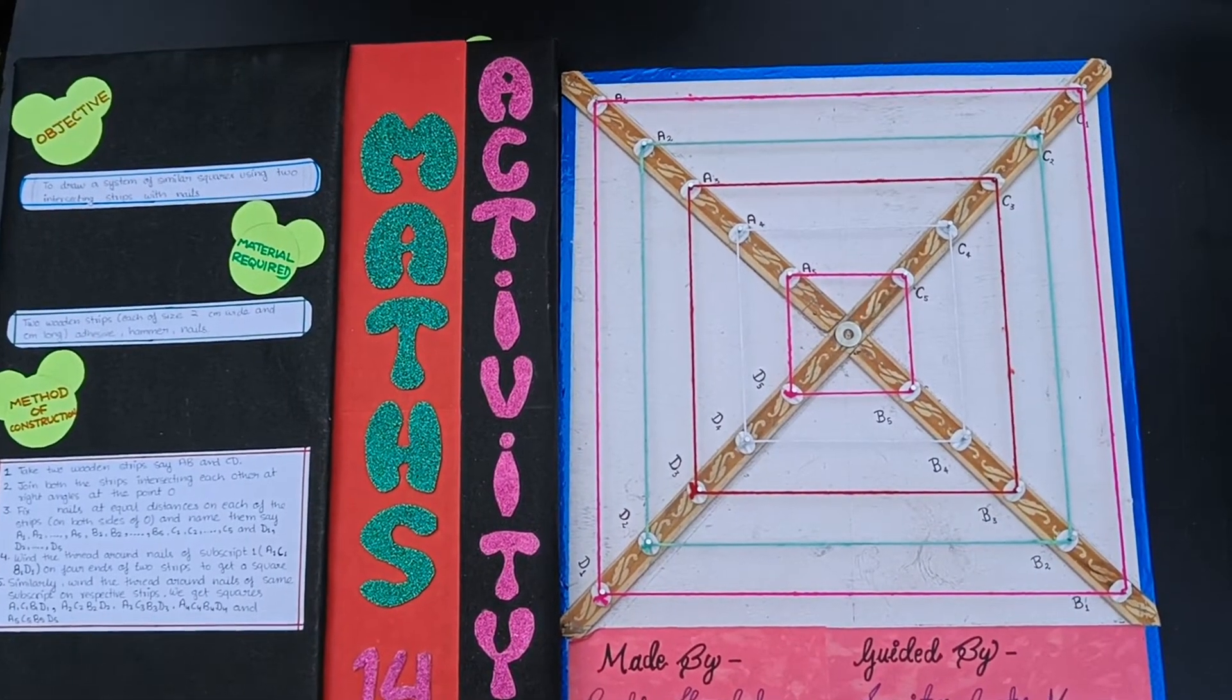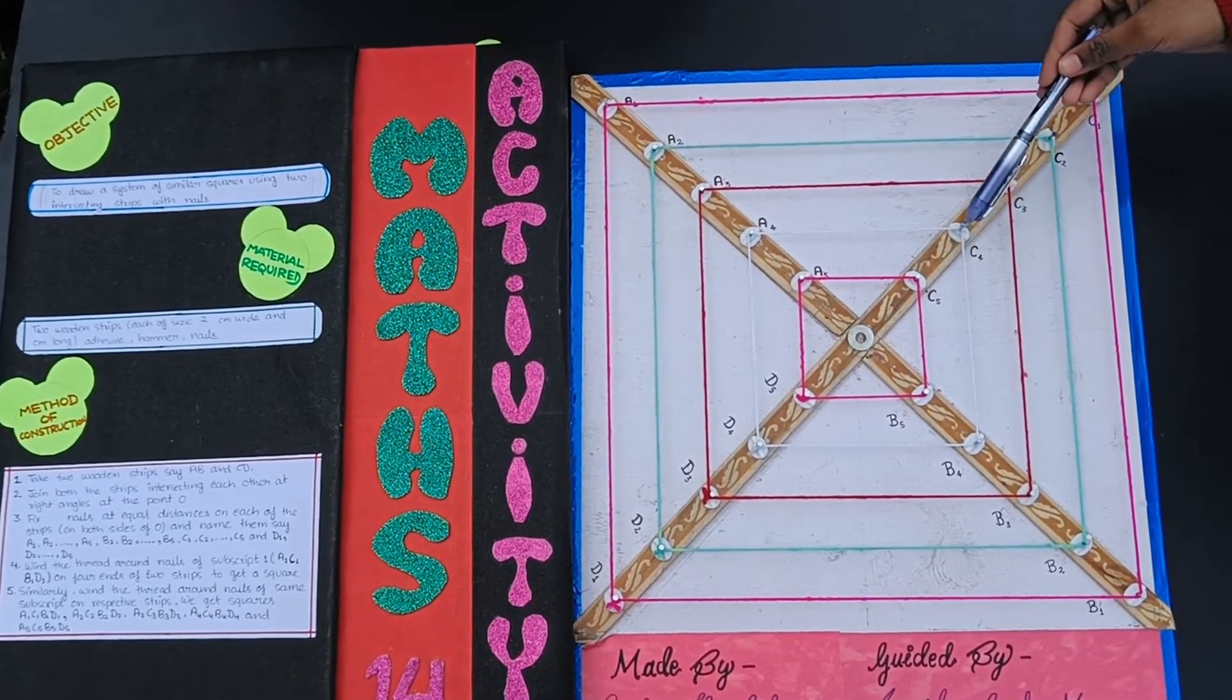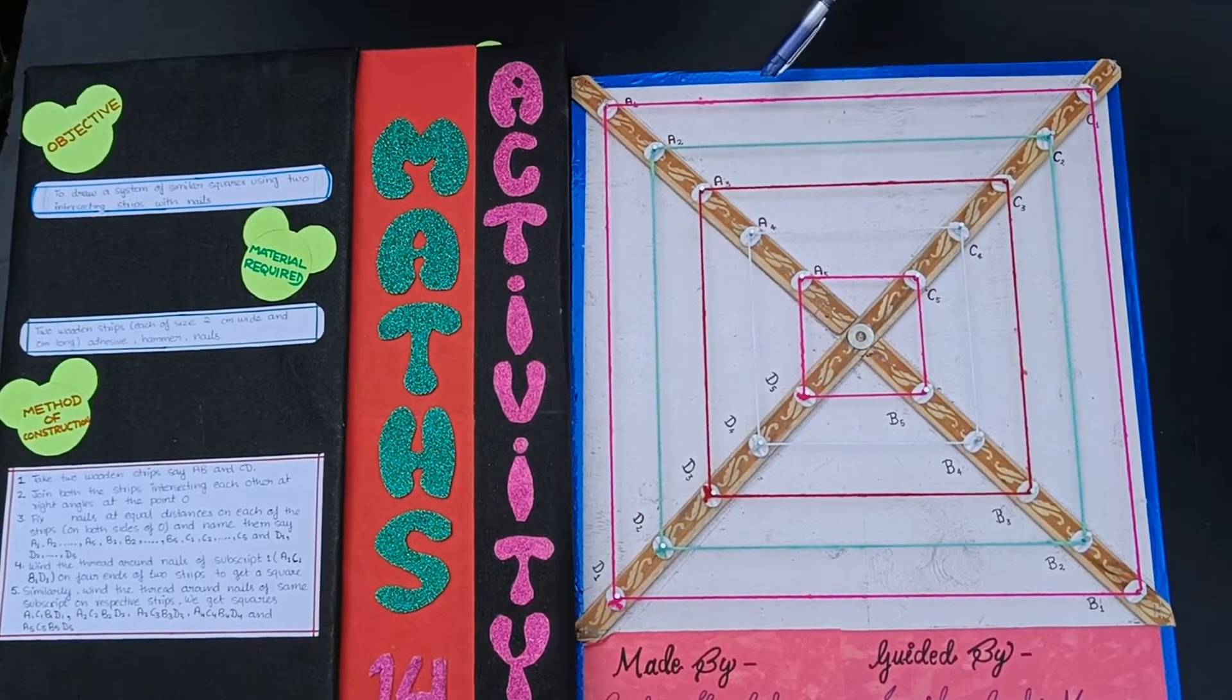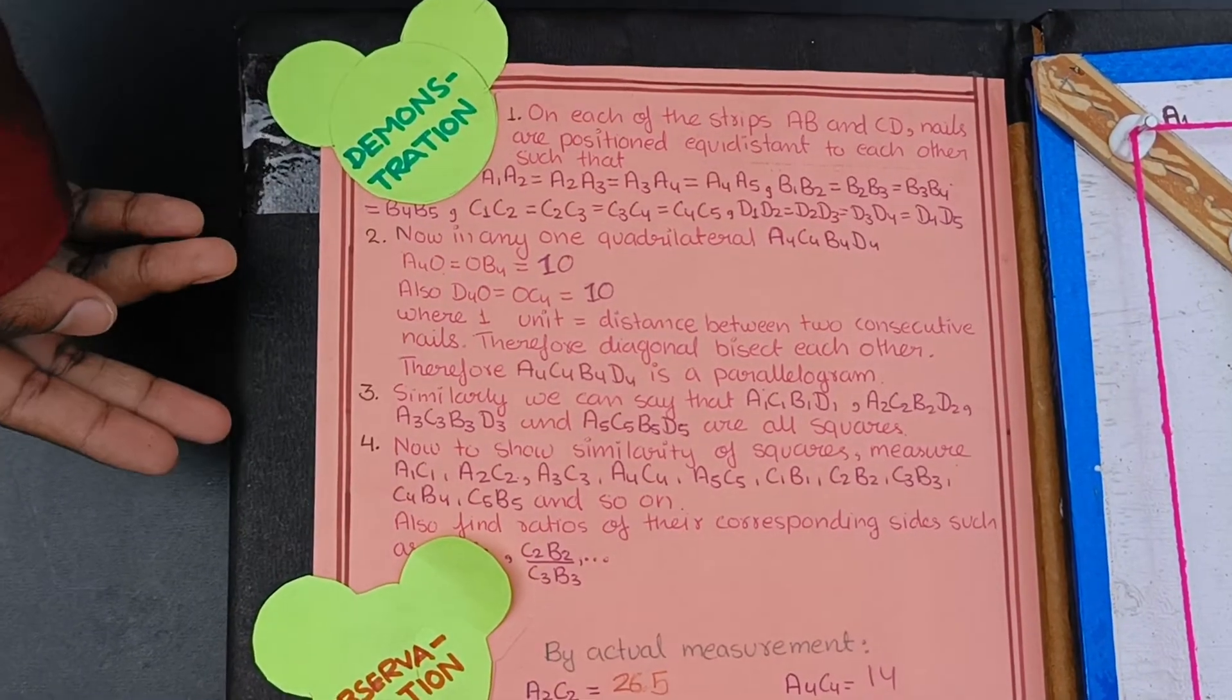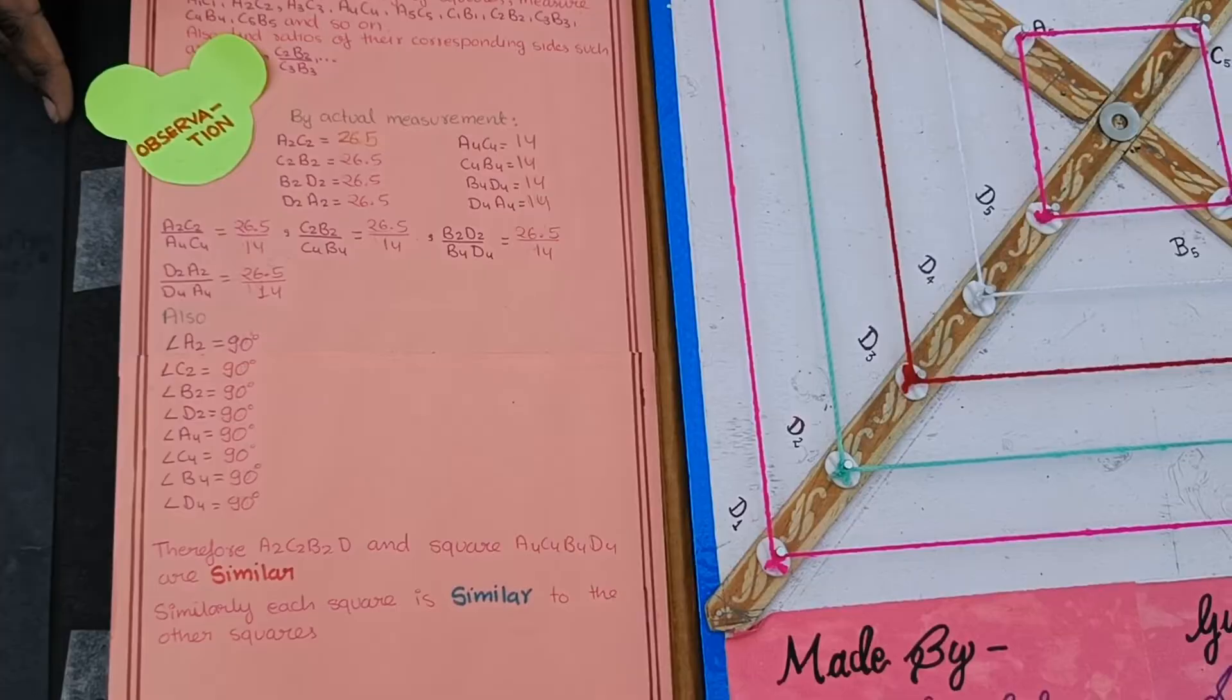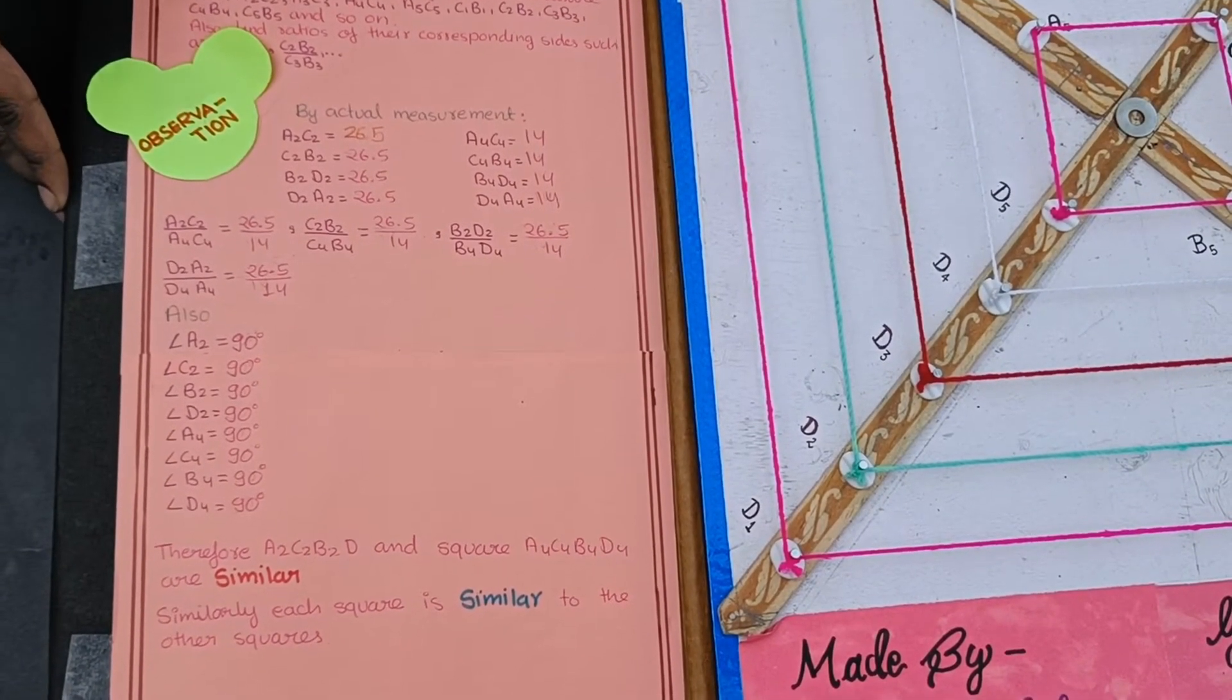Hence, similarity means that all angles are equal, but corresponding sides are in same ratio. So, this is the set of similar squares. Here is the demonstration of model as you see in screen. And here is observation of model as you see in screen.